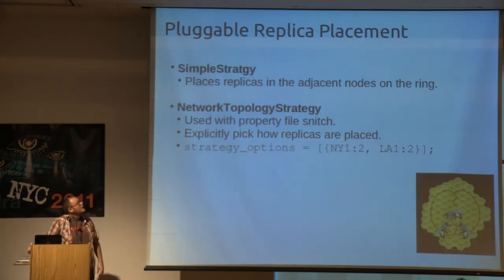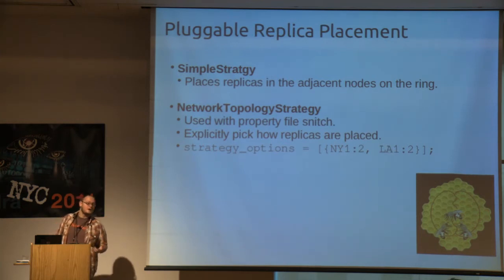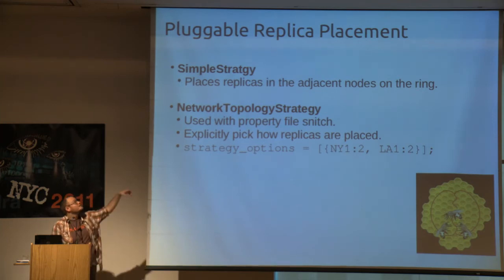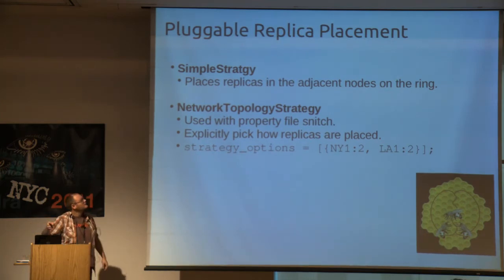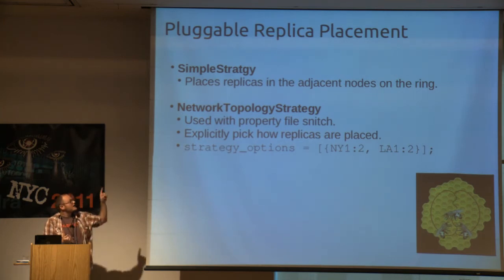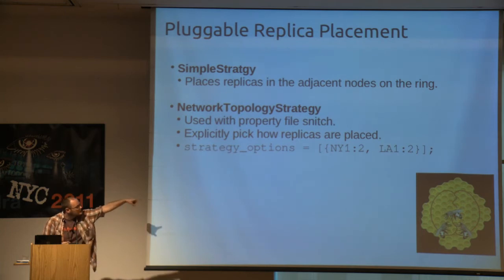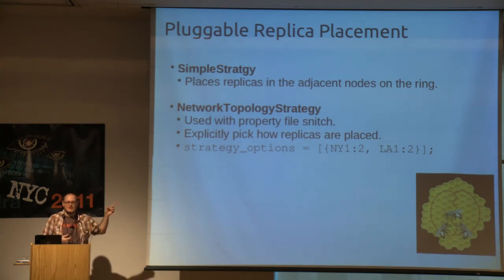Now that you've decided your topology, you choose the strategy for where other replicas go. There's simple strategy, which is fine for a single data center — it just places replicas in adjacent nodes. Network topology strategy is used with the property file Snitch and allows finer-grain control over where replicas go. When defining your schema, you can specify something like: strategy options equals New York two replicas, LA two replicas, or whatever. I think the syntax has been updated and you can do it through CQL now.